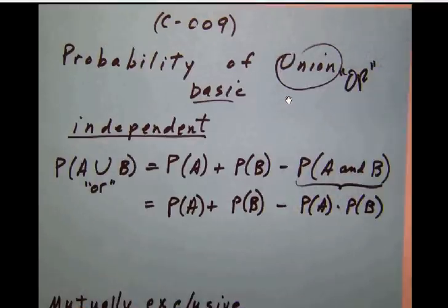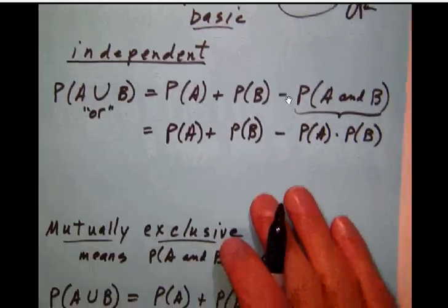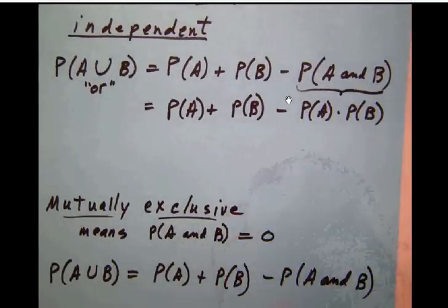We're basically going to use the probability formula. As we've told you here before, the probability of A or B is the probability of A plus probability of B minus the probability of A and B.